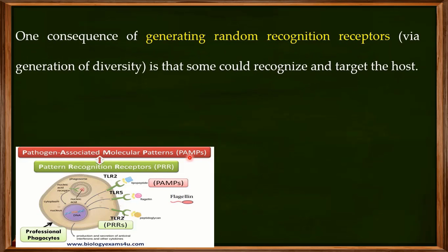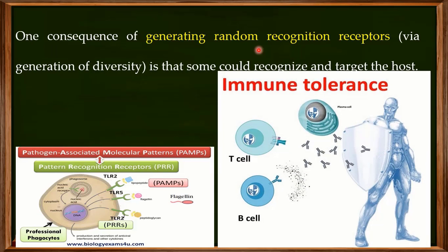In a previous video, I discussed a mechanism known as the generation of diversity. Briefly, this means that immune cells have the potential to produce pattern recognition receptors for almost any pathogen in the world. But the problem is that one consequence of generating these random recognition receptors is that some of these receptors could recognize and target the host cell. There is a particular mechanism which ensures that these receptors only interact with pathogens and not with host cells.